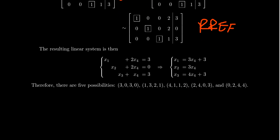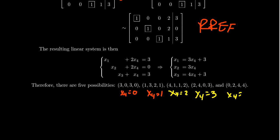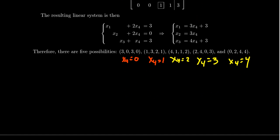For any choice of x4 you get a solution. If x4=0: (3, 0, 3, 0). If x4=1: 3+3=6≡1, giving (1, 3, 2, 1). If x4=2: 2×3=6≡1, 1+3=4; 2×3≡1; 4×2=8≡3, 3+3=6≡1; giving (4, 1, 1, 2). Then x4=3 and x4=4 give the remaining two solutions. These are the five possibilities.